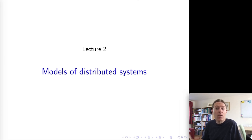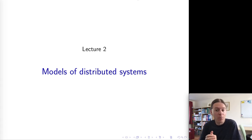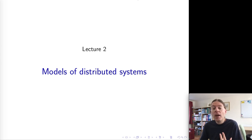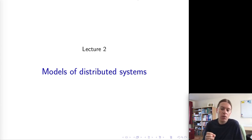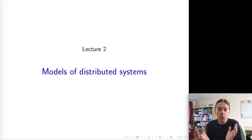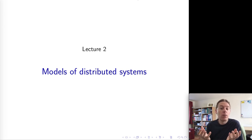Hello everybody, welcome back. In the last lecture we introduced distributed systems by looking at some concrete examples such as the web and RPC, which are examples of client-server systems. In this lecture we're going to move things to a little bit more abstract and more general model, and we're going to talk about system models for distributed systems, which are descriptions of the assumptions that we make when we're designing an algorithm to run in distributed systems.